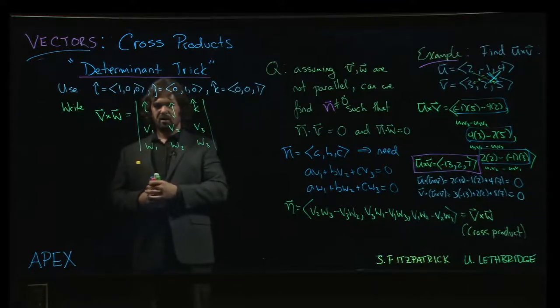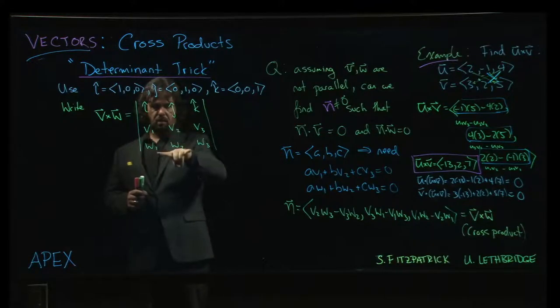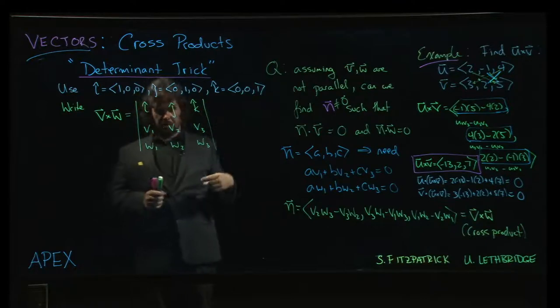Now this, of course, it's not quite right to call this a determinant because the first row here consists of vectors, and a determinant should have numbers everywhere. The components of your first vector go in the second row, components of your second vector go in the last row, and in the top row are these basic unit vectors.